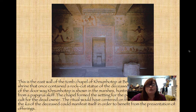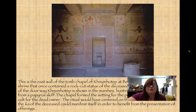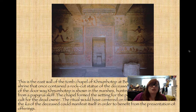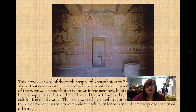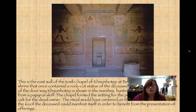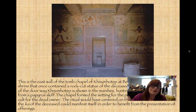This is the east wall of the tomb chapel of Khnumhotep at Beni Hasan, looking into the shrine. That doorway would once have held a rock-cut statue of the deceased — most tombs have been raided since antiquity and many statues are missing. To the left and right of the doorway, Khnumhotep is shown in the marshes hunting birds with a throw stick. This setting is for performing the funerary cult for the deceased owner. The ritual was centered on the statue in the shrine, believing that the ka — the soul of the deceased — would manifest there to benefit from offerings.